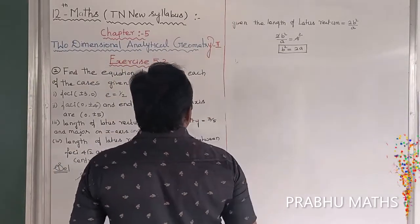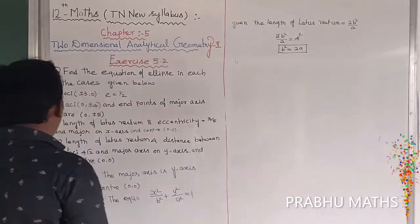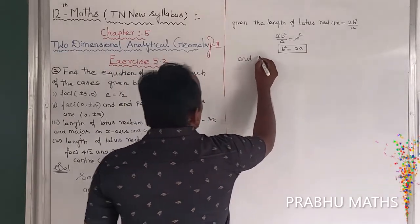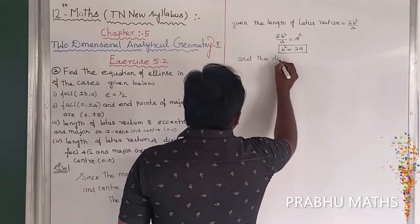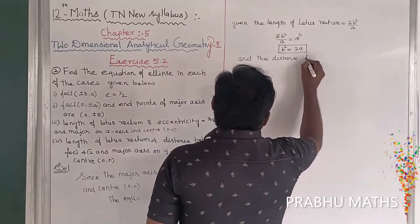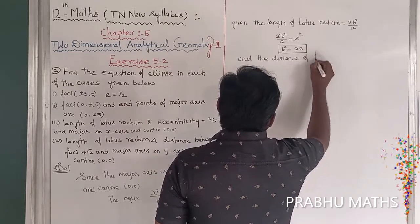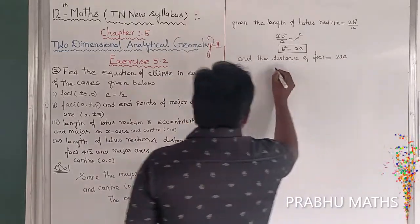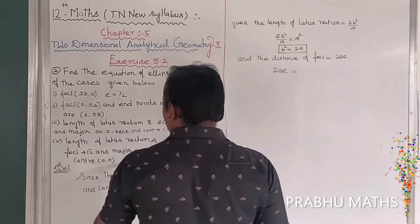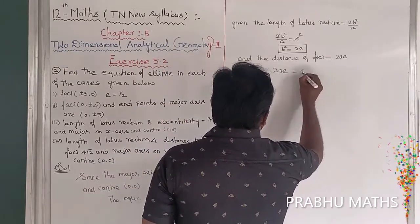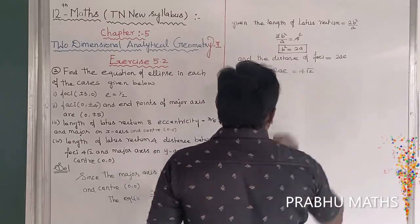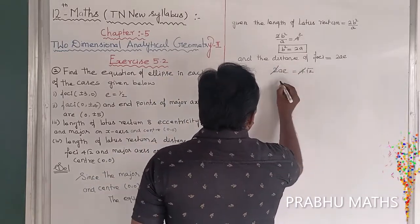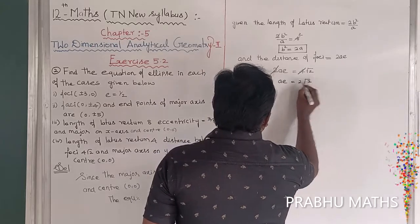Next, the distance between the foci is 2ae. So 2ae = 4√2, which gives us ae = 2√2.